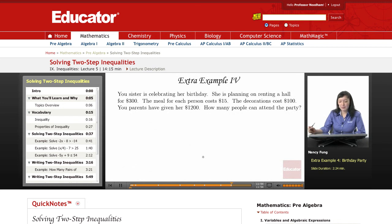Your sister is celebrating her birthday. She's planning on renting a hall for $300. The meal for each person costs $15. The decorations cost $100. Your parents have given her $1,200. How many people can attend the party?